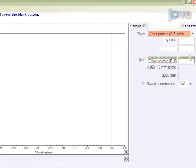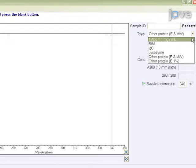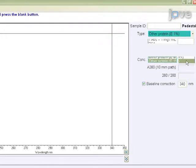If measuring a previously characterized purified protein, then either the mass extinction coefficient or molar extinction coefficient may be entered to determine the protein concentration more precisely.